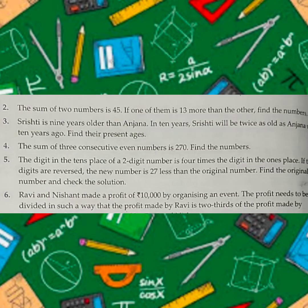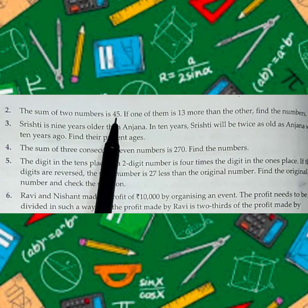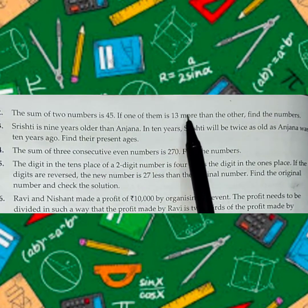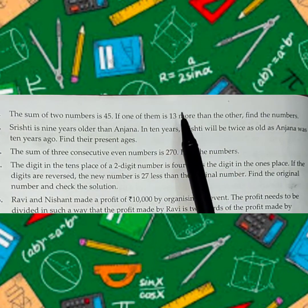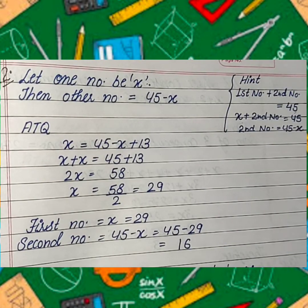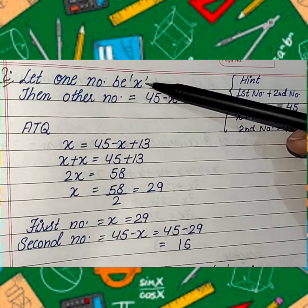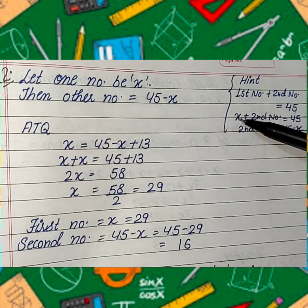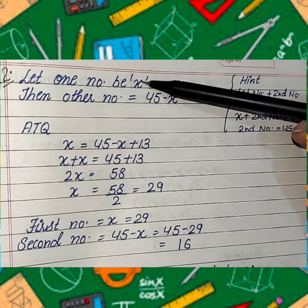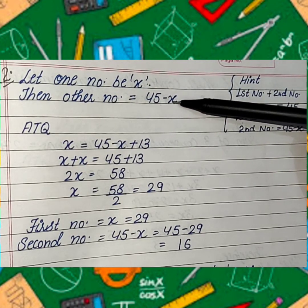Now question number 2. The sum of two numbers is given, that is 45. One of them — the first number — is 13 more than the other. Pahla number dusre se 13 zyada hai. Find the numbers. Suppose the first number is x. Then x plus second number equals 45, so second number equals 45 minus x. So first number is x and the other number is 45 minus x.